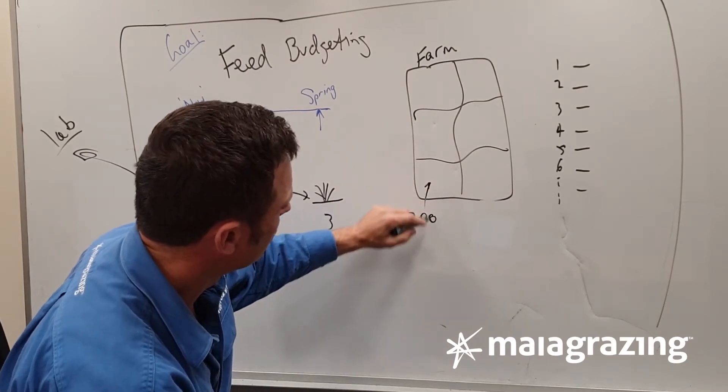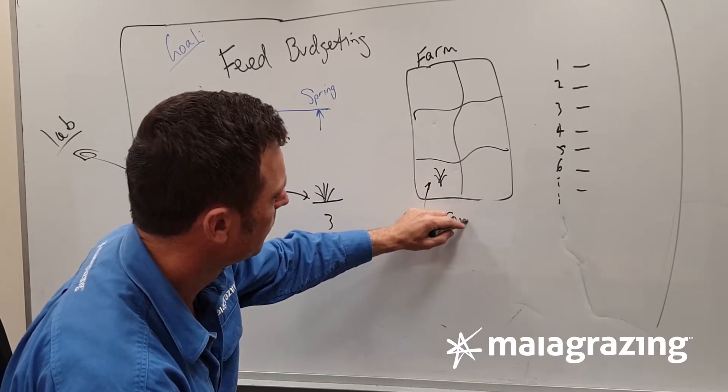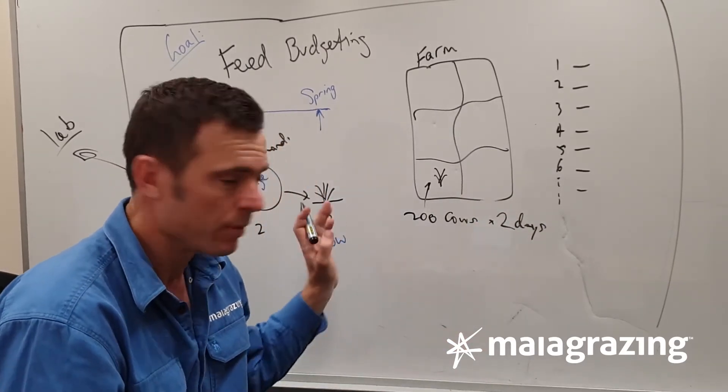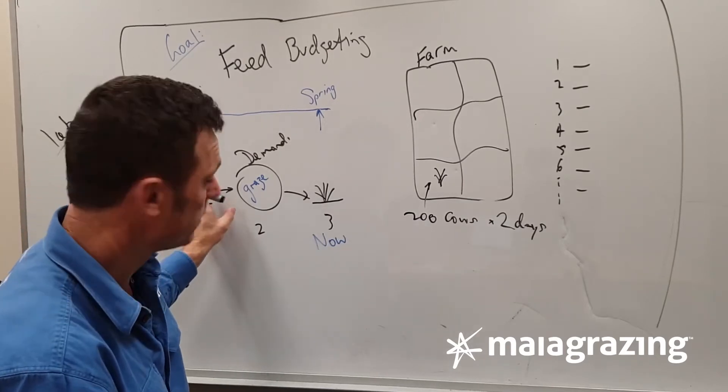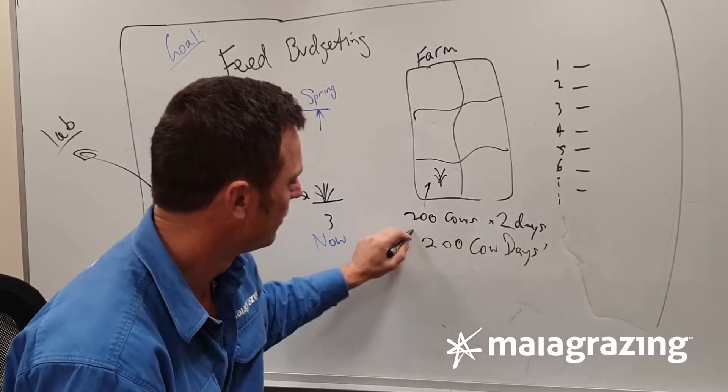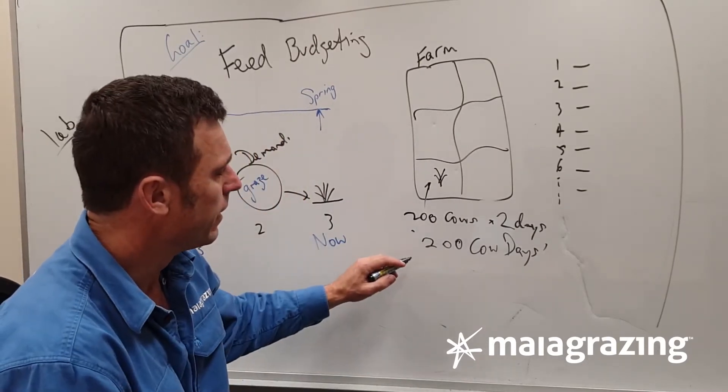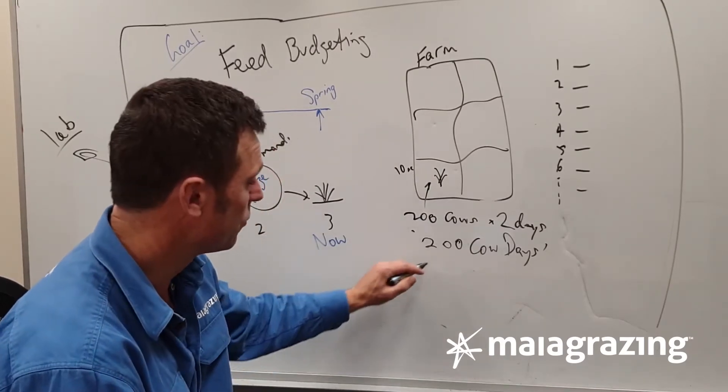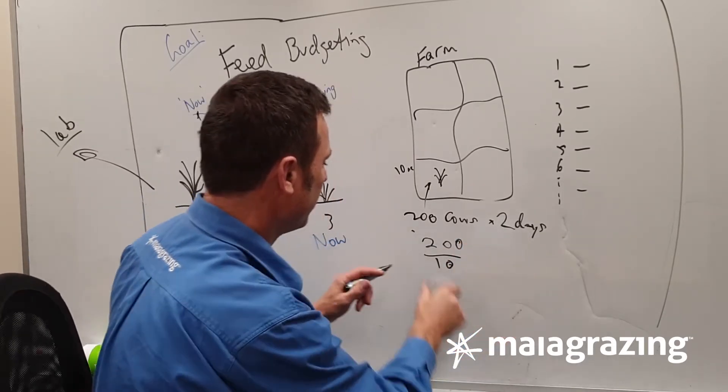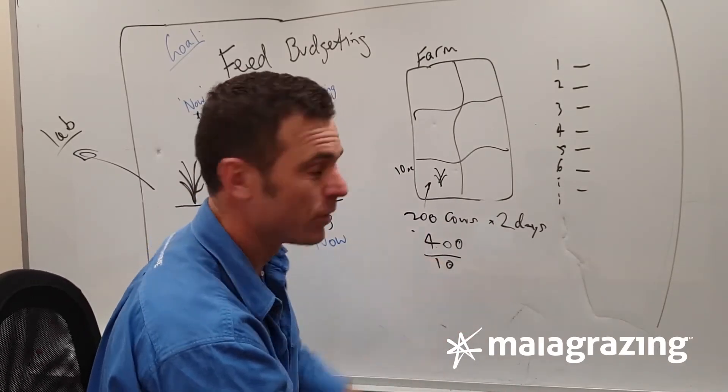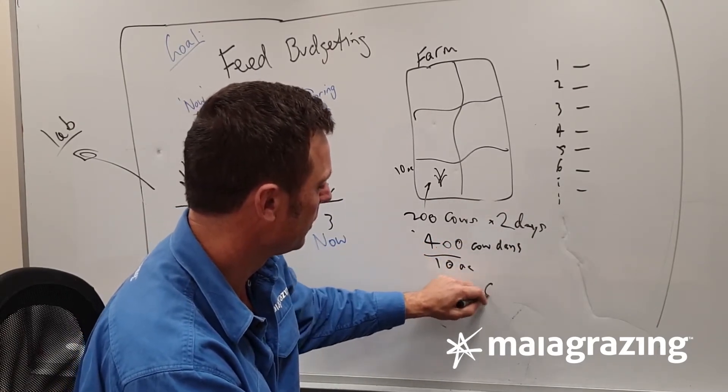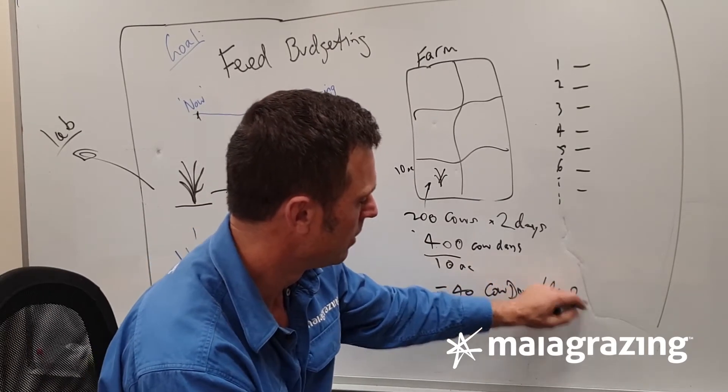We had 200 cows in this field for two days. We punched them in there and they took out what they took out over two days, 200 cows. So actually we have 200 cow days. You with me so far? We might say that was a 10-acre paddock or 10-acre field. So therefore, we have 200 times two cow days, which is 400 cow days divided by 10 acres equals 40 cow days per acre.